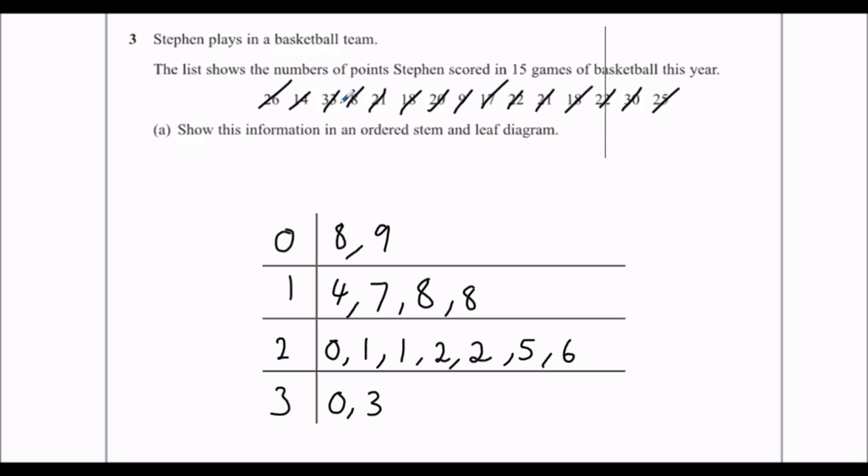So, are they all ticked off? Yes, they are. Are there fifteen numbers here? Six, seven, eight, nine, ten, eleven, twelve, thirteen, fourteen, fifteen. So I think I've got it right.